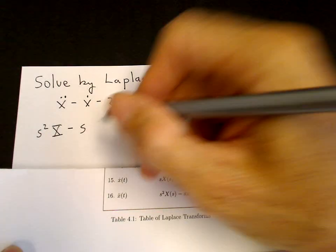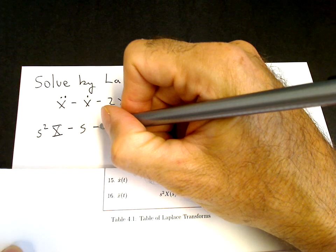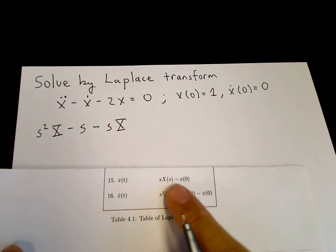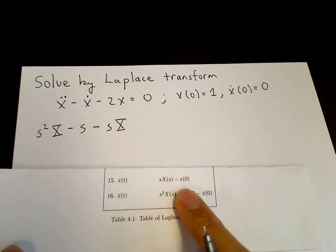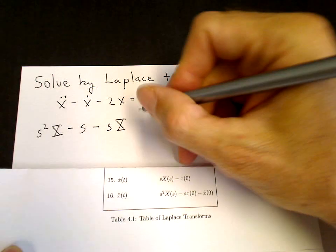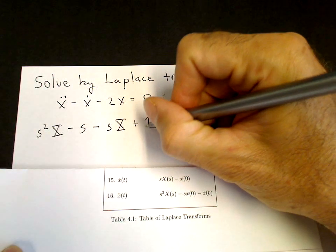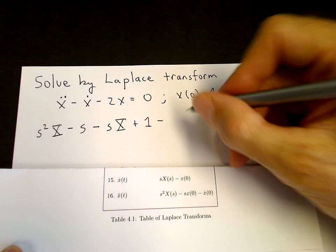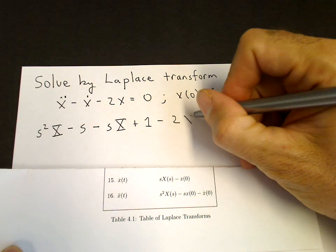Minus X dot, the Laplace transform of X dot is S times capital X, minus X of 0. X of 0 is 1, so plus 1. That takes care of X dot. Minus 2x, minus 2 capital X.